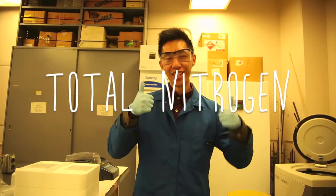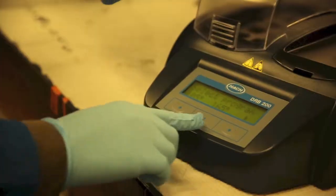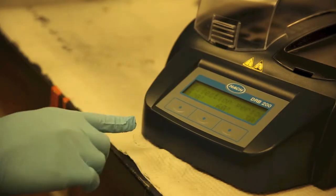In this video we'll go over the procedure to test for total nitrogen. First start your reactor and set the temperature to 105 degrees Celsius.